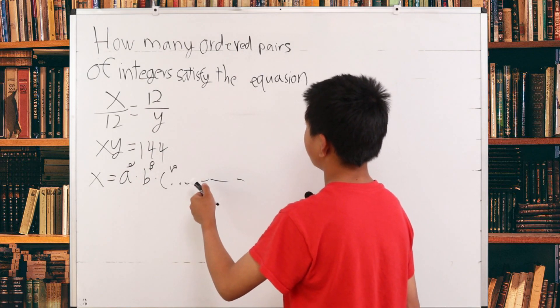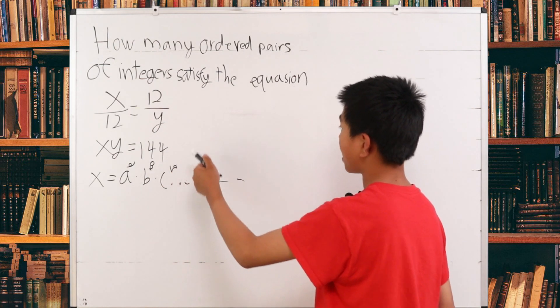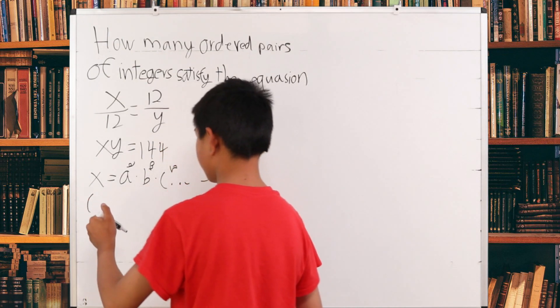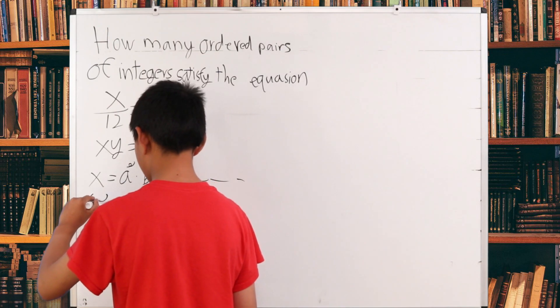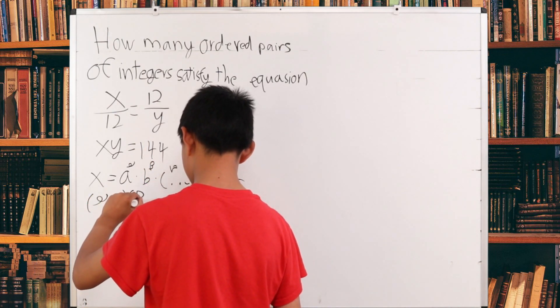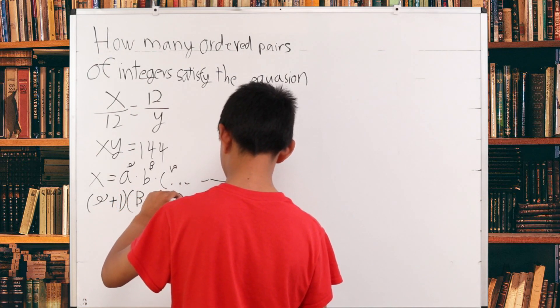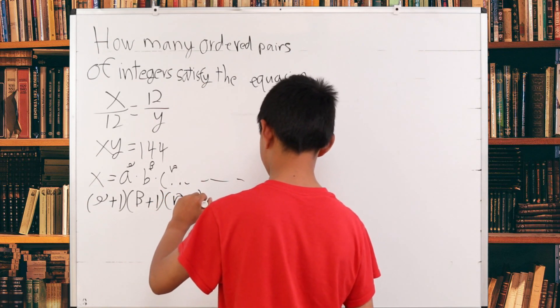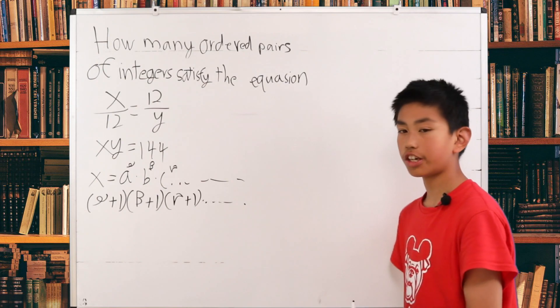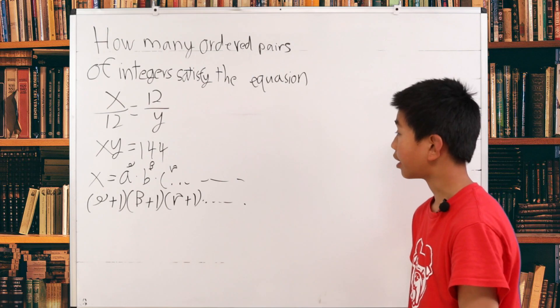And in this case, to find how many ordered pairs, what you do here is you multiply the power plus 1. So it's going to be alpha plus 1 times beta plus 1 times gamma plus 1, etc. So that is actually going to be the strategy we use today. And we need to verify it.